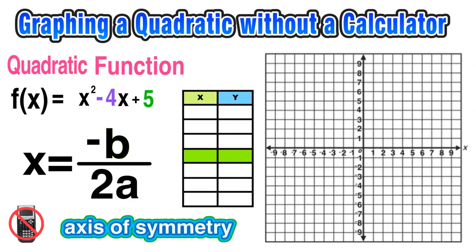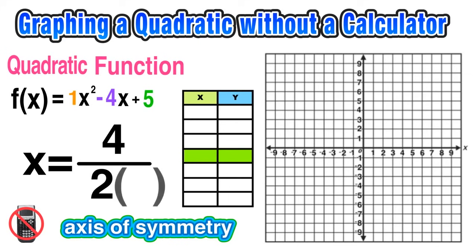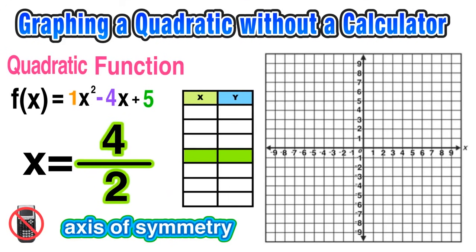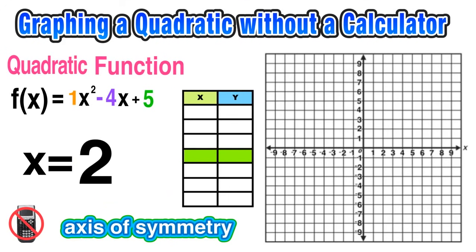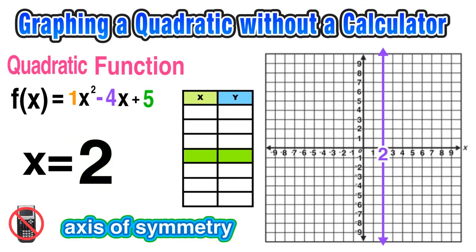Let's replace b in the formula with the b term from the quadratic, which is negative 4. So negative negative 4 is positive 4. In the denominator, 2 times a — the a term is 1 — so 2 times 1 is 2. Finally, 4 over 2 equals 2, so our axis of symmetry is at x equals 2. An x equals equation is a vertical line; in this case at positive 2. The axis of symmetry is the line that goes through the vertex of the parabola.